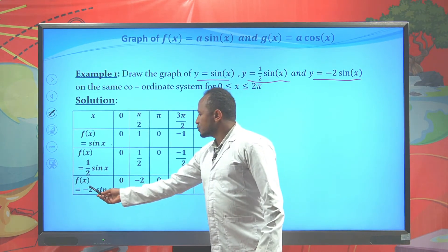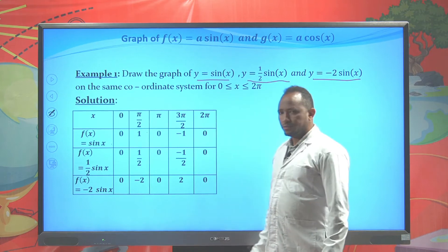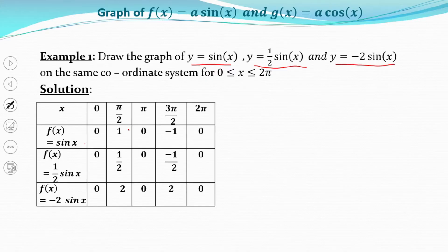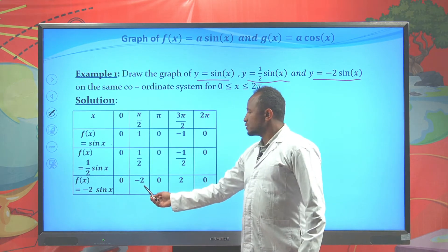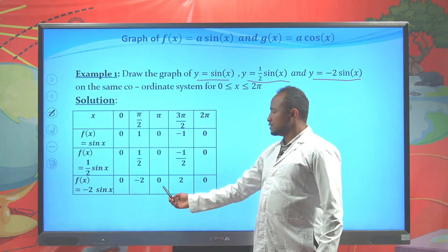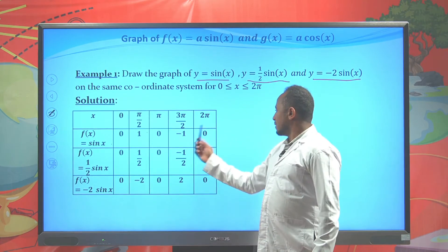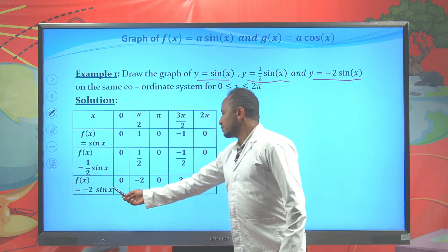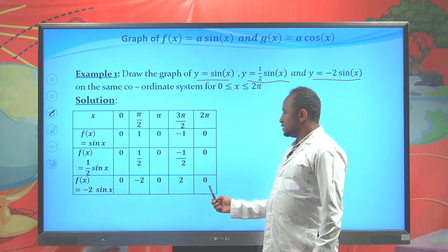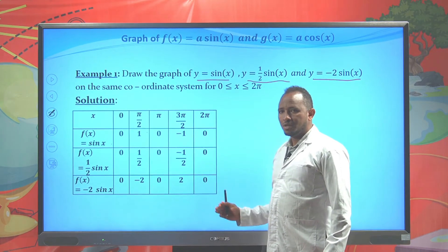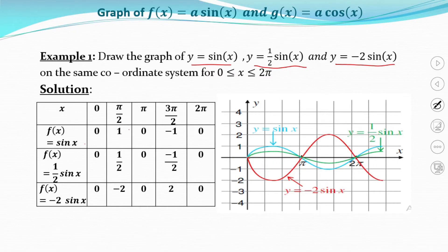For f(x) = -2sin(x), multiply each sin(x) value by -2: -2×0 = 0, -2×1 = -2, -2×0 = 0, -2×(-1) = 2, and -2×0 = 0. Using this table, we can draw the graph of all three trigonometric functions on the interval 0 to 2π on the same coordinate system.